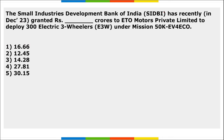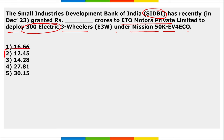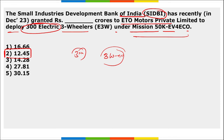Next: SIDBI recently granted how much amount to ETO Motors Private Limited to deploy three-wheeler electric vehicles under the Mission 50K-EV4ECO? SIDBI granted 12.45 crore rupees to ETO Motors Private Limited to deploy 300 units of three-wheeler electric vehicles under this mission.